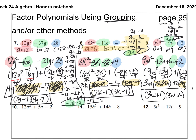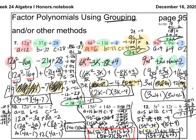The answer to number 10 is (4a minus 1)(3a plus 2). The answer to number 11 is (5b minus 2)(3b plus 4). The answer to number 12 is (5t minus 3)(t plus 3). If you'd like me to go through each of those three problems step by step during the Google meet or in person, just let me know and I'd be happy to do that.